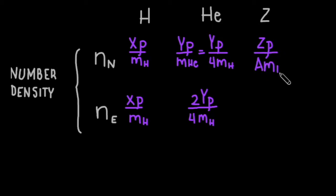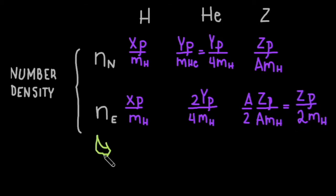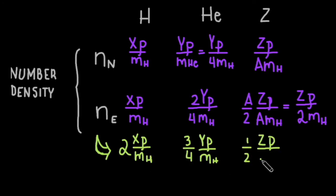The number density of metal nuclei is z times the density over a times the mass of hydrogen, where a is the atomic weight. We can find the number density of electrons by multiplying this by a over 2. Assuming a is sufficiently greater than 1, the number density of a metal nuclei is negligible.